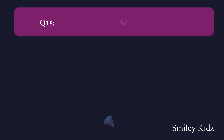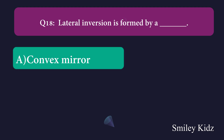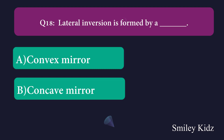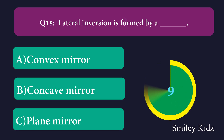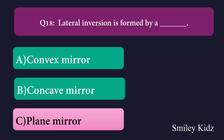Question number eighteen: Lateral inversion is formed by a dash. Option A: convex mirror, Option B: concave mirror, Option C: plane mirror. The right answer is plane mirror. Lateral inversion is formed by a plane mirror.